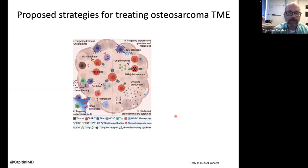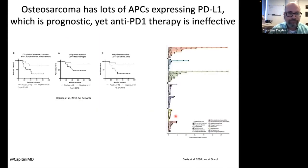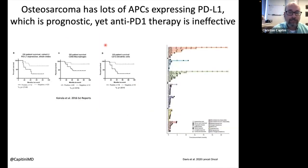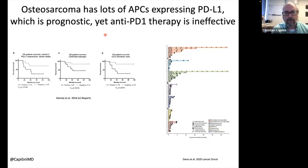There are now four proposed strategies to treat the osteosarcoma tumor microenvironment. The first is to target immune checkpoints — molecules on cells that control whether our immune system gets turned on or off. One of interest is PD-L1. Macrophages are antigen-presenting cells; they present small fragments of proteins called peptides to our T cells. If that peptide is presented with PD-L1, the T cell gets turned off and just ignores the cancer cell instead of eliminating it.